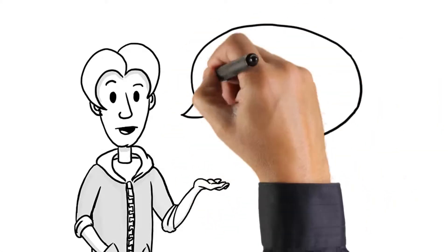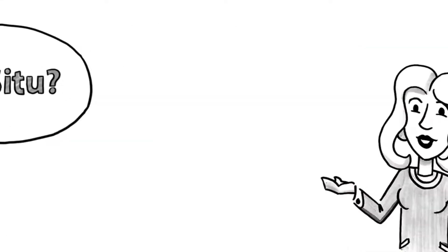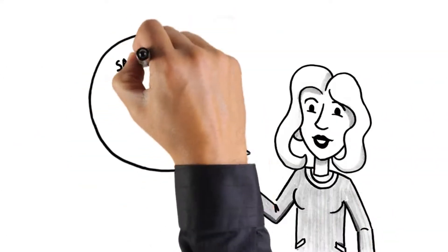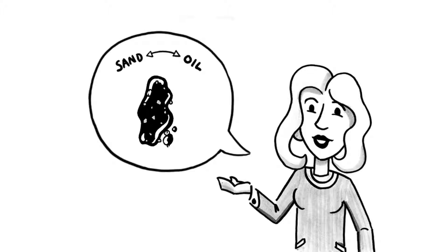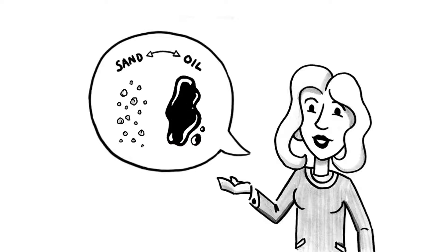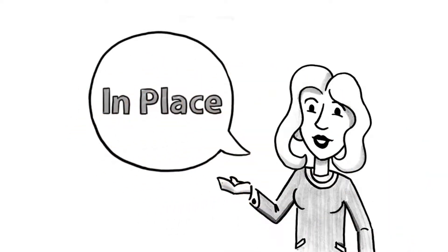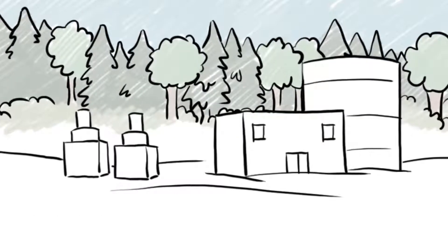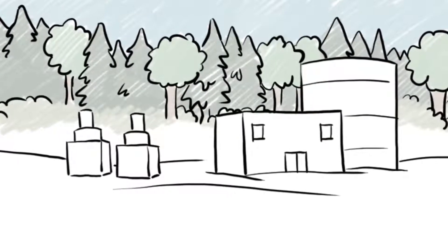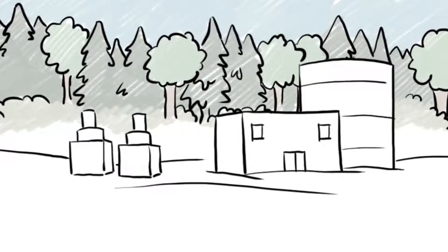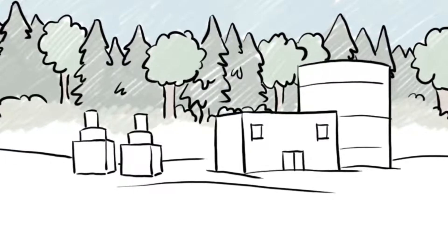Keith asks how in situ technology works. Rita explains that the in situ process extracts the oil from deep underground deposits. The oil is often separated from the sand underground or in place, which is what in situ means in Latin. Unlike mining, there are no tailings produced and facilities take up a smaller portion of the land being developed.